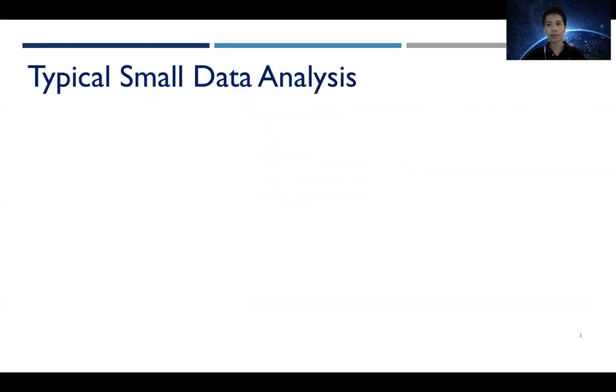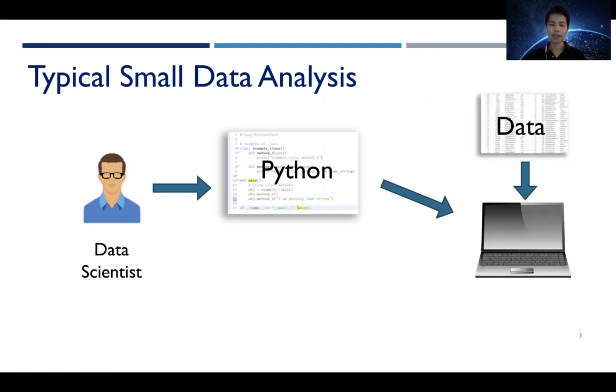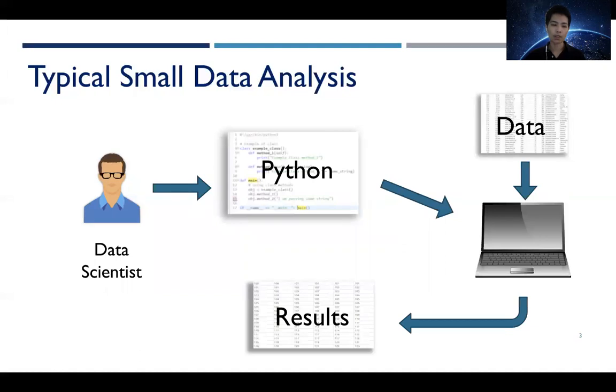In a typical small data analysis, a workflow usually goes like this. We have a data scientist who develops a data analysis pipeline and machine learning model using Python. Running that locally on a laptop on top of a small dataset produces some results, which the data scientist will evaluate and oftentimes make some adjustment to the machine learning model or the data analysis pipeline, rerun it, and then reevaluate the results again. This is an iterative process that goes on until the data scientist is satisfied with the model performance.